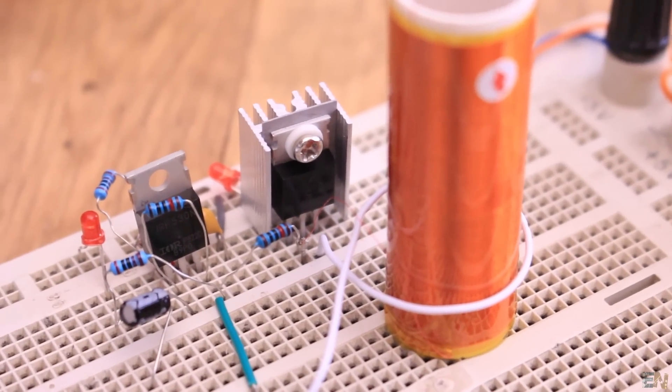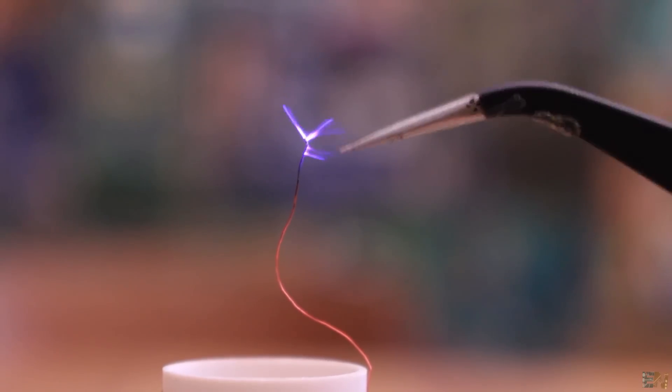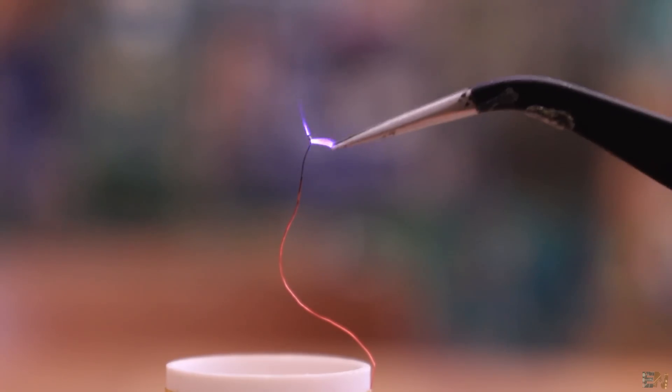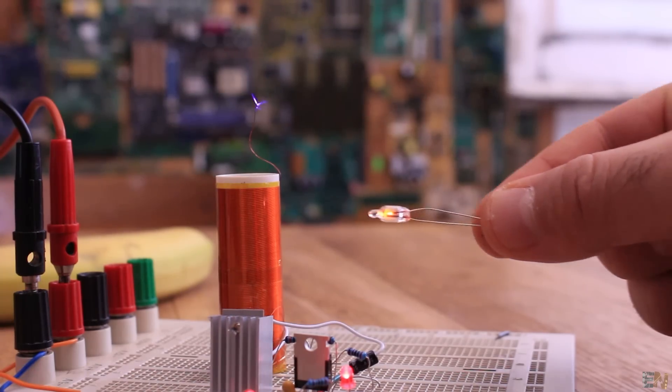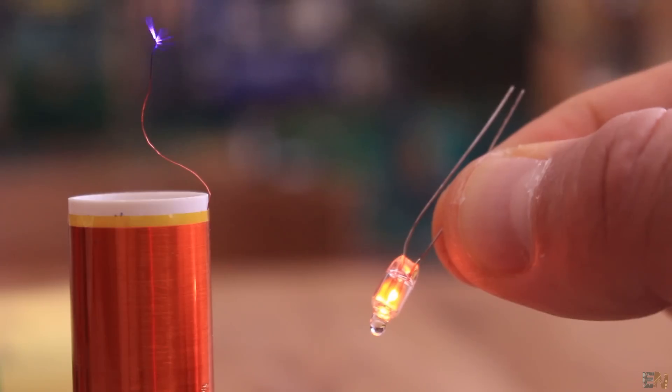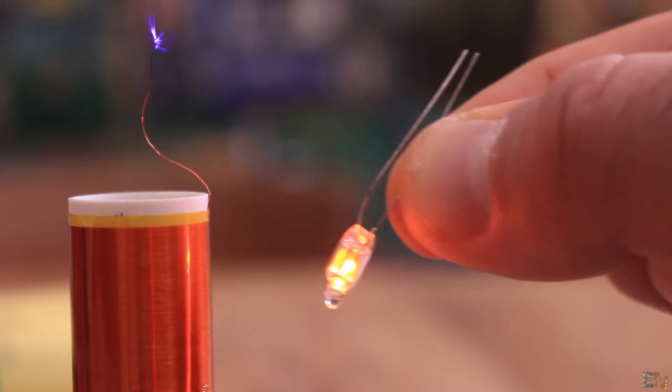Depending on the Tesla coil power, the voltage arcs could get bigger. This project is very cool to look at, but not just that, it could also wirelessly transport power for some sort of devices, like for example this small neon light.